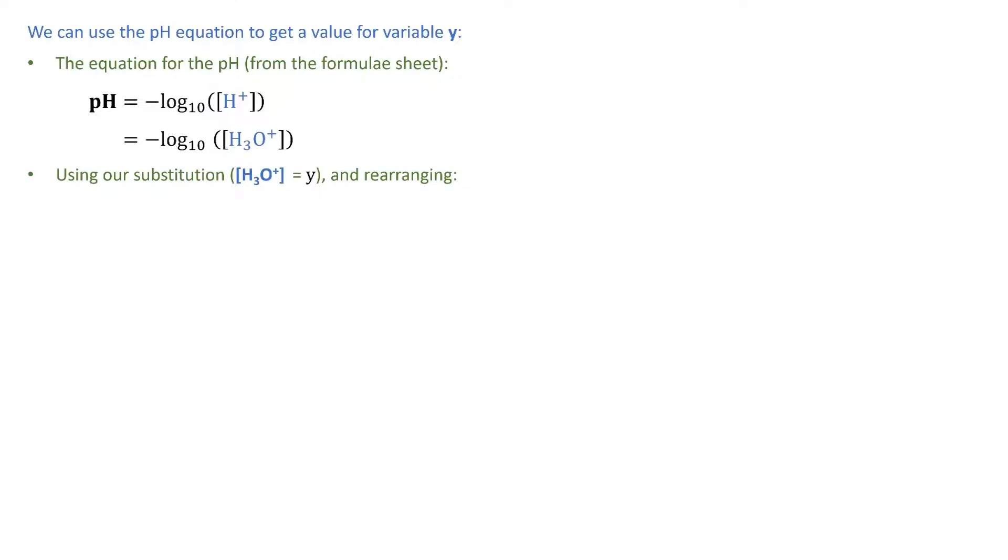Now that we have our expression for Ksp and Ka, we just need to use the equation for pH to determine a final answer. The equation for the pH can be found on the formula sheet, which is the pH is equal to the negative log base 10 of the hydrogen ion concentration. Of course, the hydrogen ion is another way to write out the hydronium ion, so we can just say it's equal to negative log base 10 of the hydronium ion concentration. Making our substitution of variable Y into the equation, we can show how this leads to a concrete value for Y.